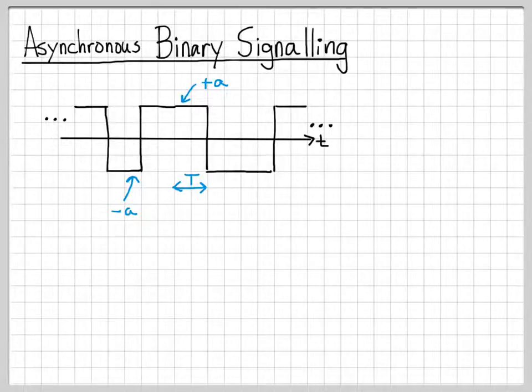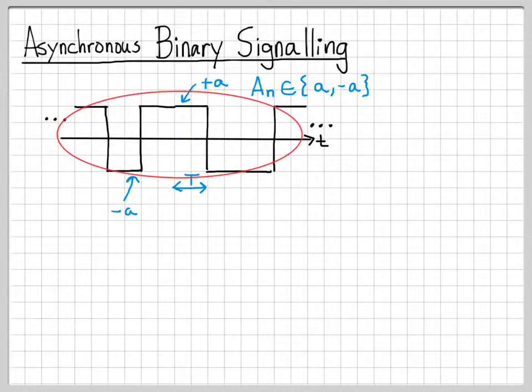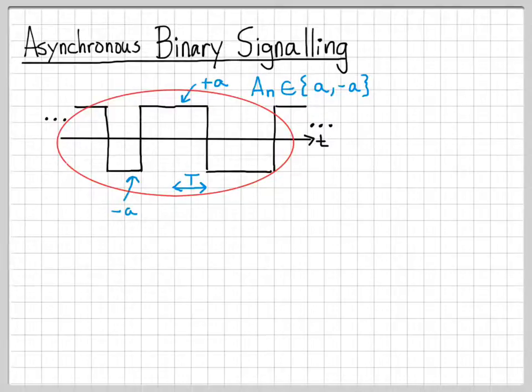These amplitudes are random values. Each amplitude, which we denote as An (capital A because it's a random quantity, n denotes the nth pulse), is always one of these values - either a or minus a, but we don't know which one. We could end up with a random process with positive pulses for long periods or negative pulses for long periods. What it looks like depends on the sample function we grab.